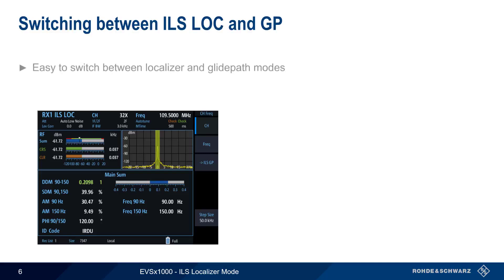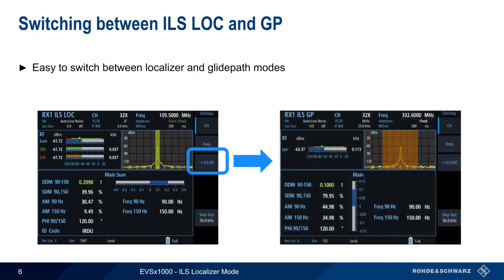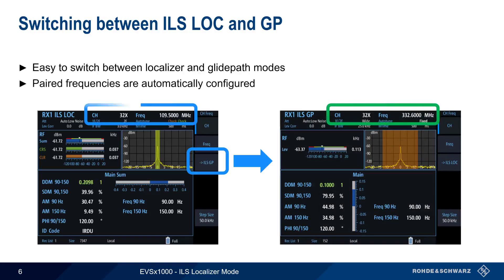The EVS also provides an easy way to switch between localizer and glide path modes. Pressing the ILS Glide Path key switches the EVS to glide path mode, and the glide path frequency is automatically configured based on the paired localizer frequency. In this example, ICAO channel number 32X corresponds to a localizer frequency of 109.5 MHz and a glide path frequency of 332.6 MHz. The ILS Localizer key can then be used to switch back to localizer mode and revert to the paired localizer frequency.